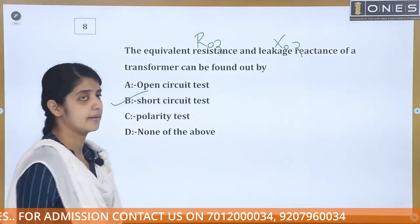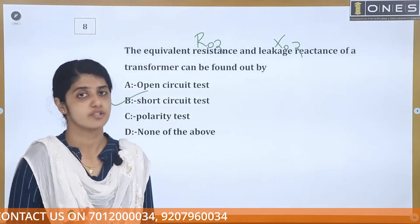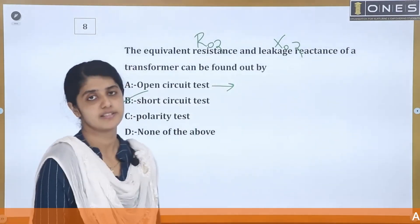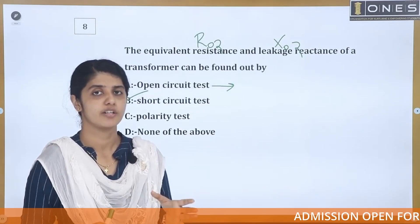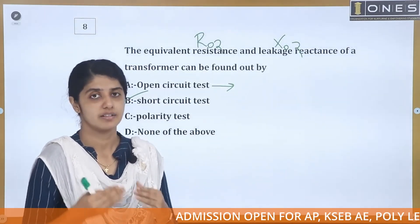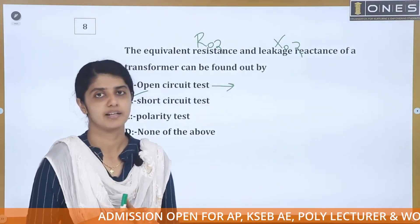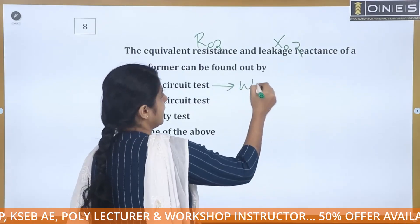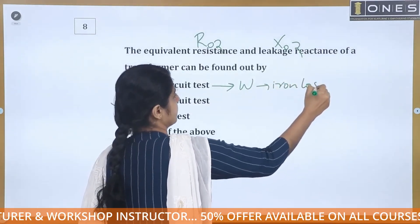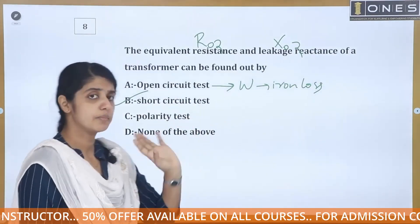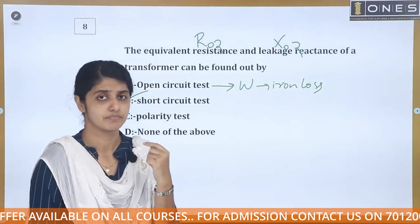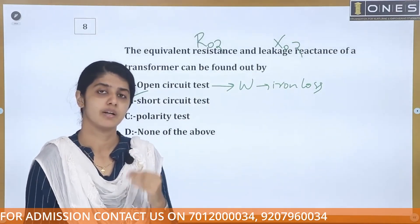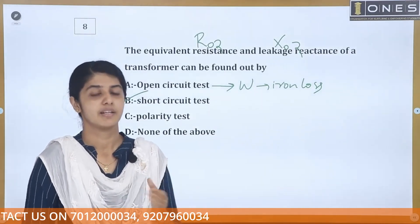We perform the short circuit test to find R02 and X02. For the open circuit test, we apply rated voltage to the low-voltage side with the high-voltage side open. We read I₀, V₀, and W₀ to calculate the magnetizing component and loss component of no-load current, then find Rm and Xm.